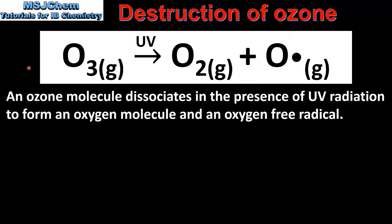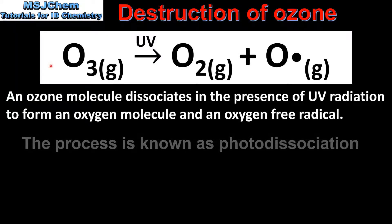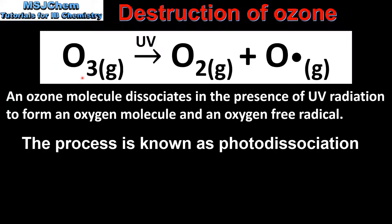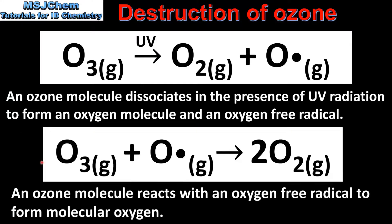Next we look at the destruction of ozone. Ozone can be broken down in two ways. In the first reaction, an ozone molecule dissociates in the presence of UV radiation to form a molecule of oxygen and an oxygen free radical. The second way in which ozone can be broken down is when an ozone molecule reacts with an oxygen free radical to form two molecules of oxygen.